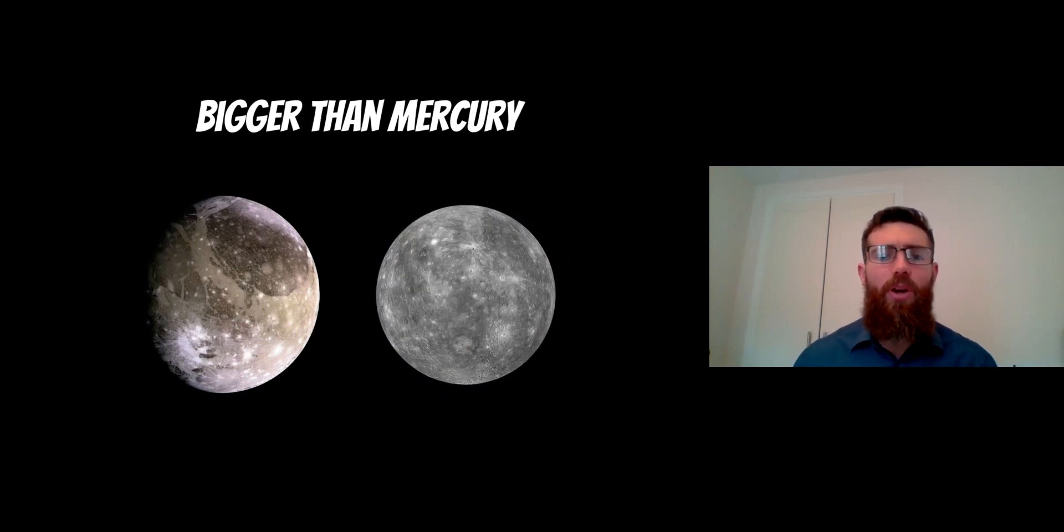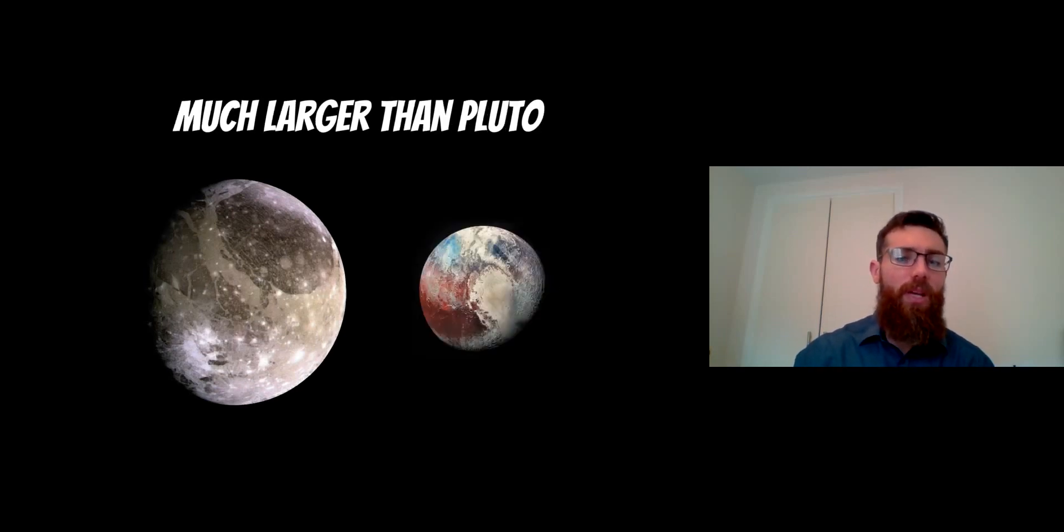It's actually bigger than Mercury. Mercury is our innermost planet, and Ganymede is bigger than Mercury—not by a lot, but it's still bigger than one of our planets. It's actually a lot larger than Pluto. Although Pluto is classified as a minor body rather than a planet, Ganymede is quite a lot larger than Pluto.